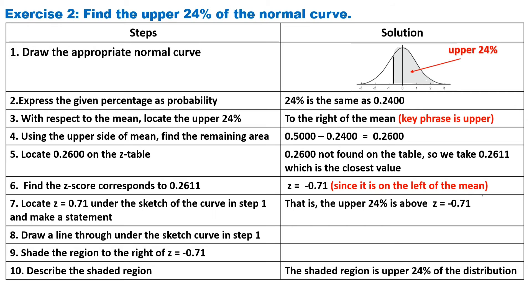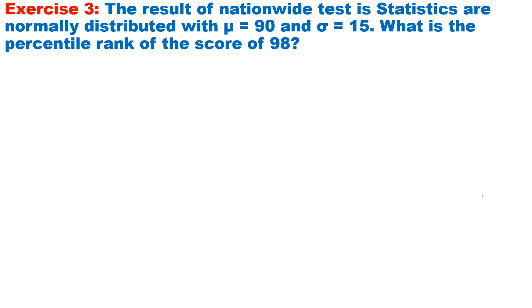And step ten, describe the shaded region. The shaded region is upper 24% of the distribution. Last problem for this video, the result of nationwide tests in statistics are normally distributed, with mu or mean equals 90 and standard deviation is 15. What is the percentile rank of the score 98?